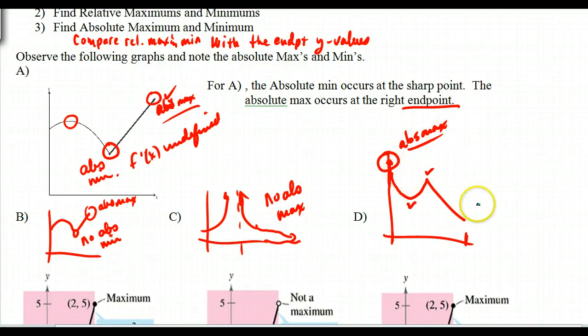It occurs at the endpoint, and then this one here would be your absolute min. Occurs at the endpoint. And so even though these are what we call critical values, this one right here and this one right here, the x values, the y values don't end up being the absolute max or absolute min for each one of those. They occur at the endpoints. So I guess the point of this is this: